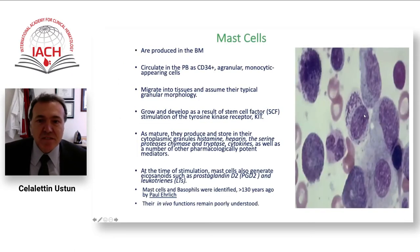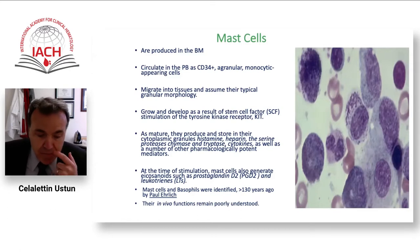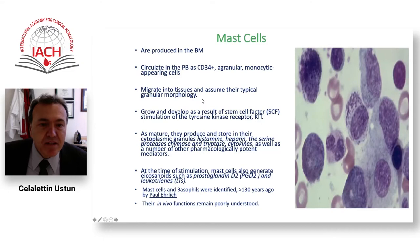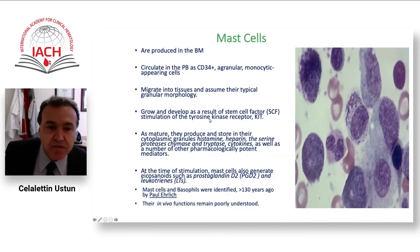Starting with mast cells — mast cells are really interesting cells, still a mystery for us, with hundreds of granules in their cytoplasm. They are, like other hematological cells, produced in the bone marrow; however, they are hard to find in the peripheral blood. As soon as they are made, they go to the tissues and function there. Their growth and development are dependent on stem cell factor, or stimulation of the tyrosine kinase receptor KIT.